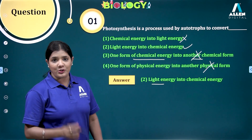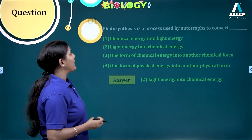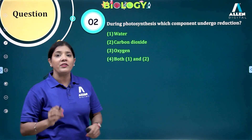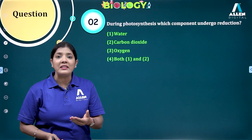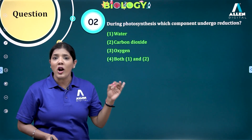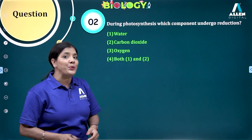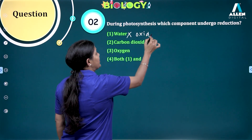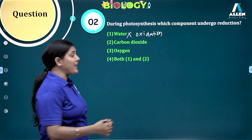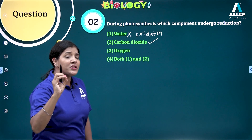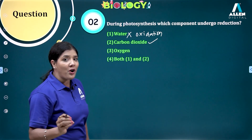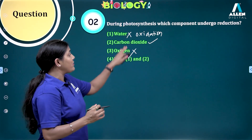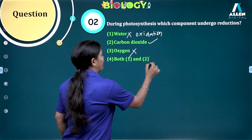The second question: during photosynthesis, which component undergoes reduction? We have studied that water undergoes oxidation and CO2 undergoes reduction. So water — no, because it undergoes oxidation. Carbon dioxide — yes. Oxygen — no, it is a byproduct formed due to oxidation of water. Both 1 and 2 — no. The correct answer is carbon dioxide.